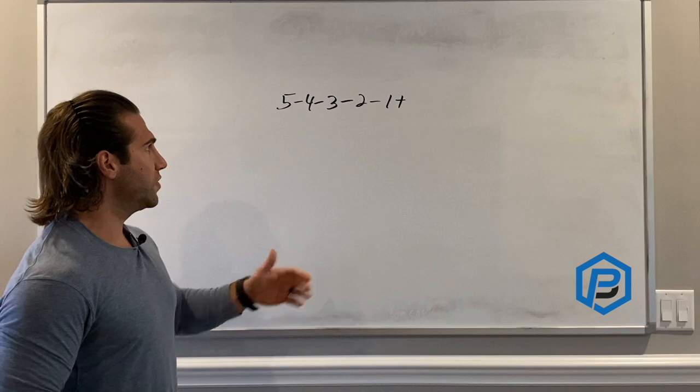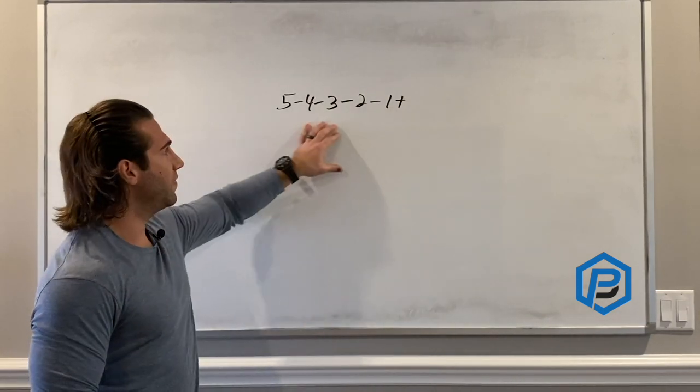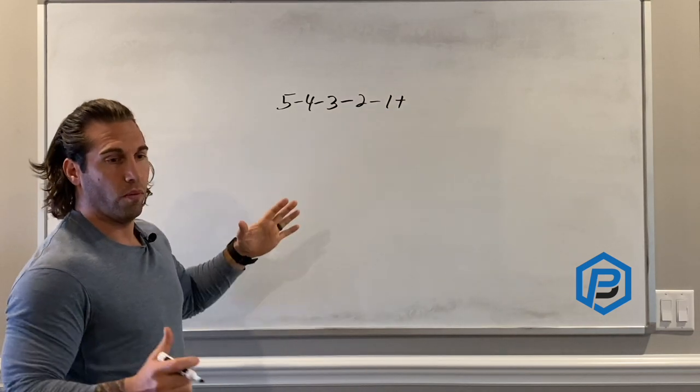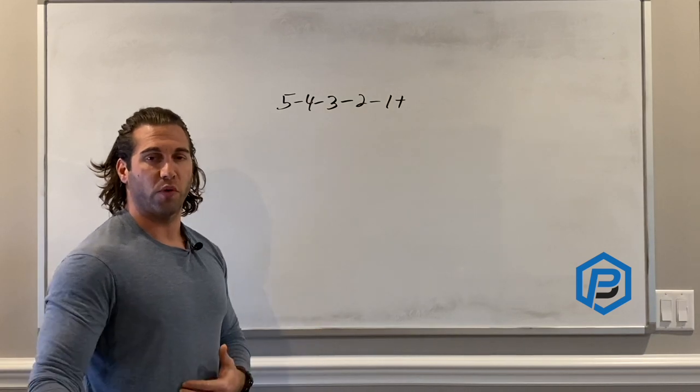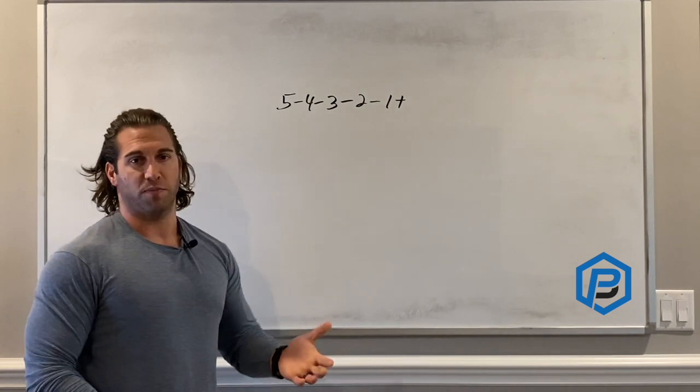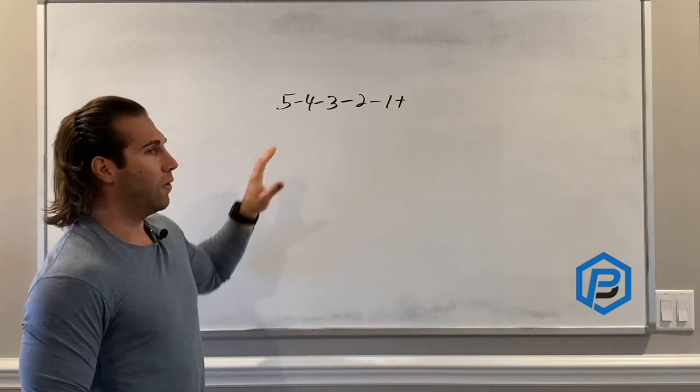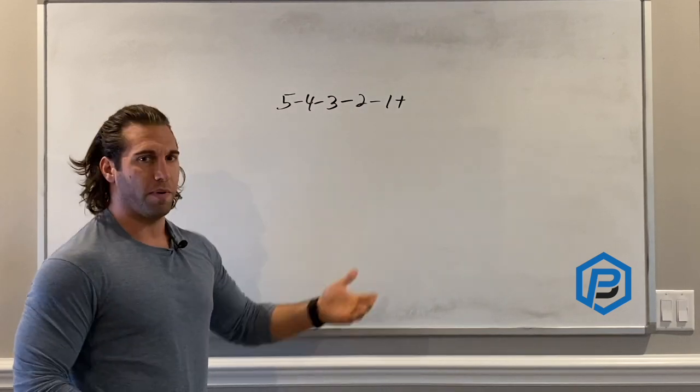What we use is a very simple rep scheme: 5-4-3-2-1+. Just to break this down in terms of volume, this is 15 total reps if we just do one rep here. We're staying within the guidelines of optimal volume. If you're familiar with Prilepin's chart, that's probably another video in and of itself talking about optimal volume prescriptions.